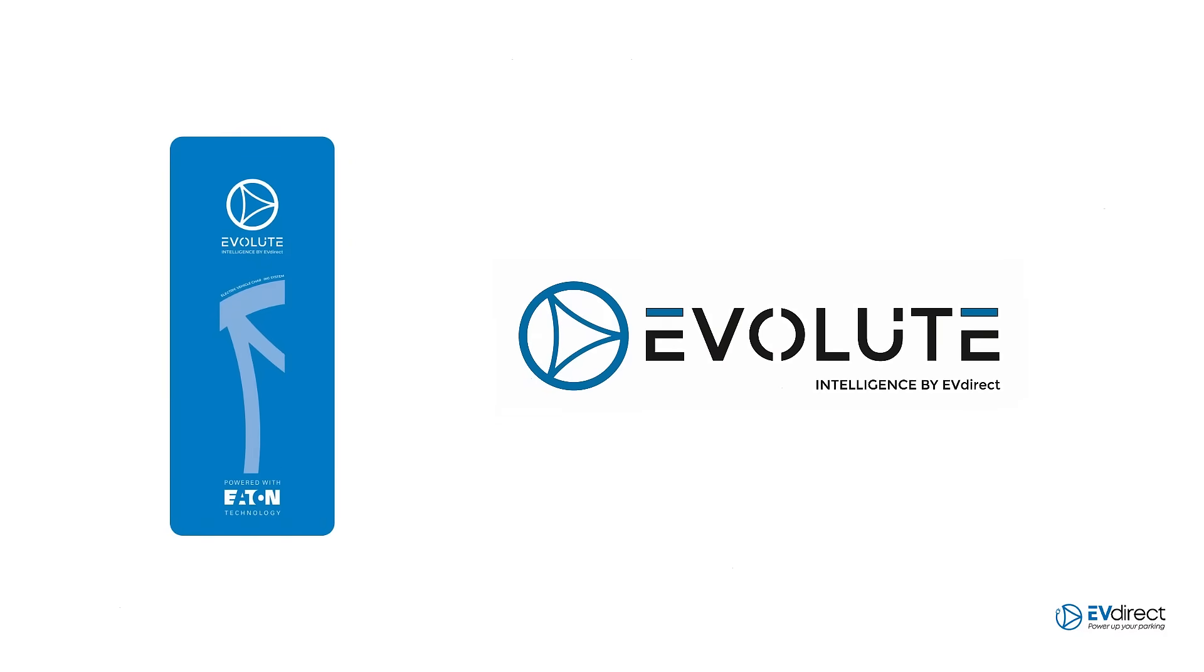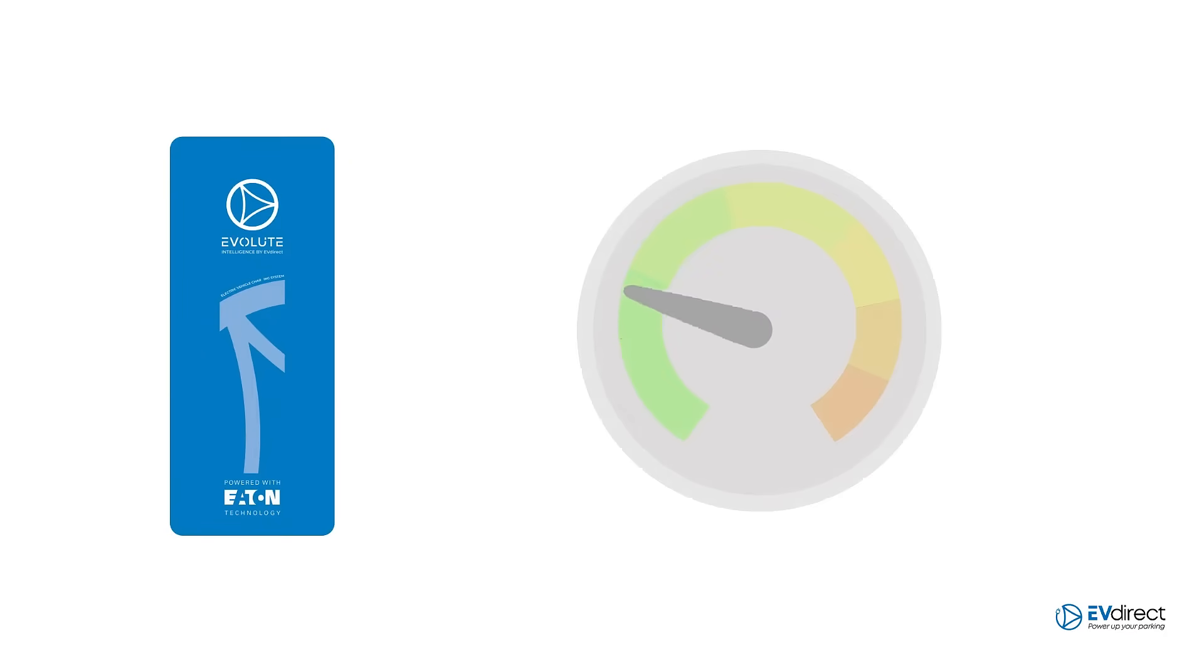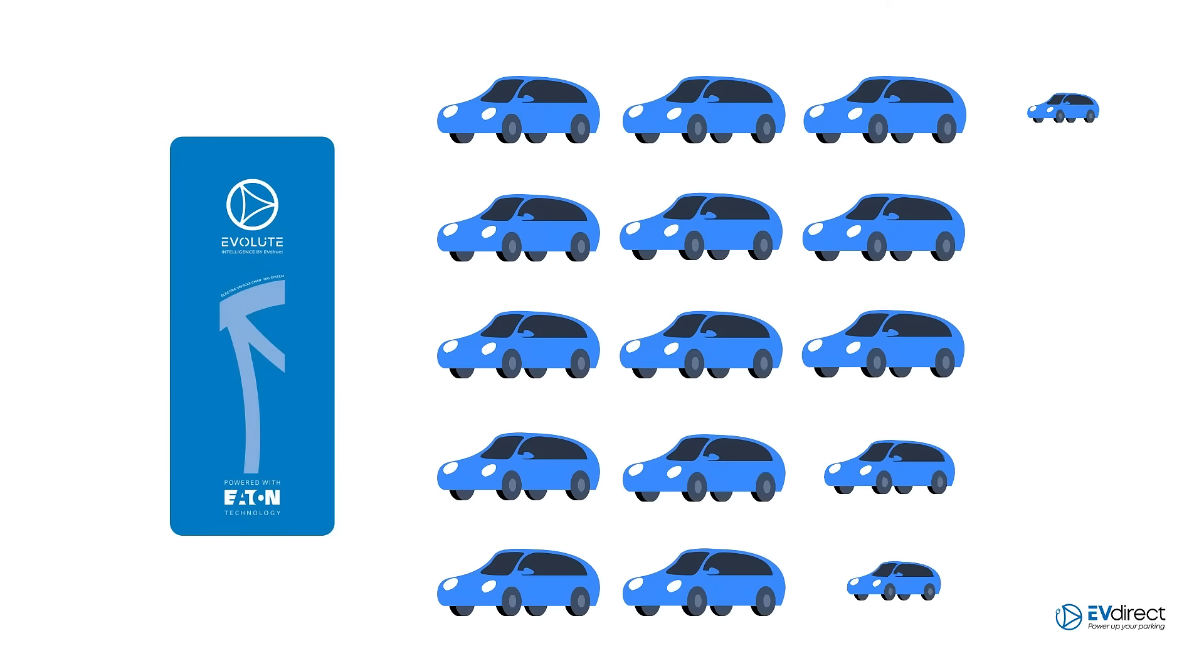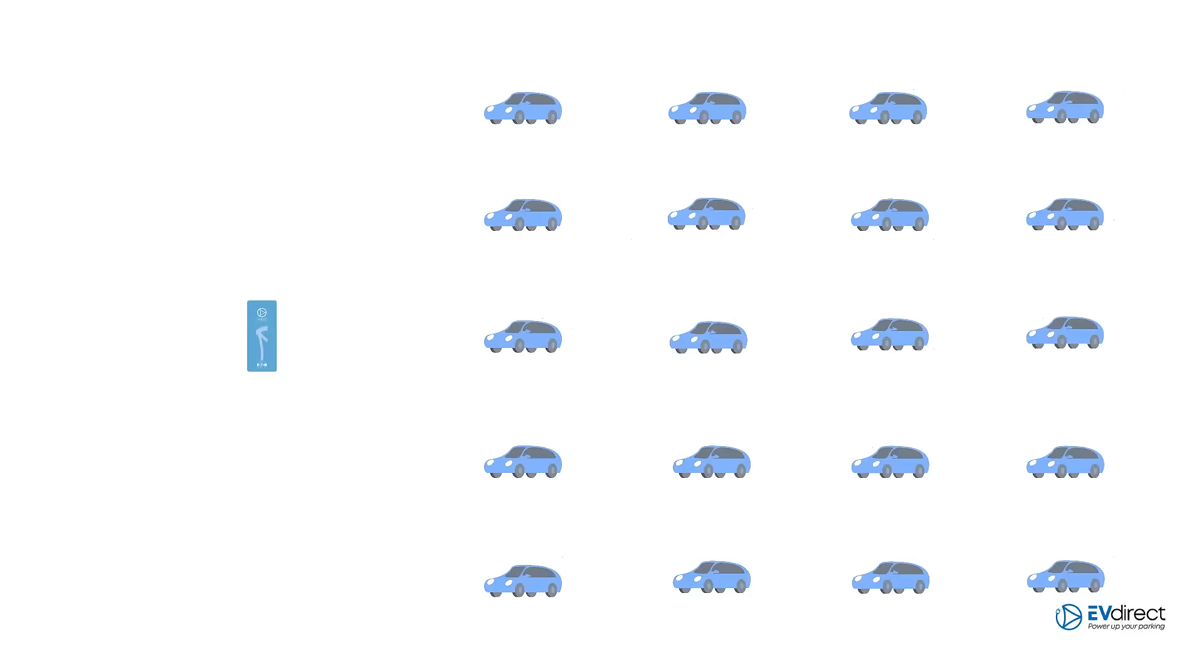The solution is a smart system. With smart infrastructure, capacity is increased and power is optimized to be shared among a greater number of vehicles. This allows the system to charge more cars with the same amount of power.